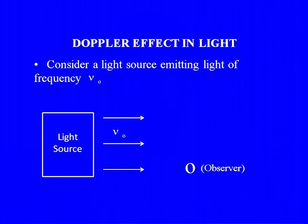Let us first consider a light source that is emitting light of a certain frequency. Let us call that frequency nu-0. And you have an observer here, shown by O, towards the right of your screen. Now, I mentioned the Doppler effect in sound — instead of this light source, you will have some source which is emitting sound, making some noise and emitting certain frequencies.